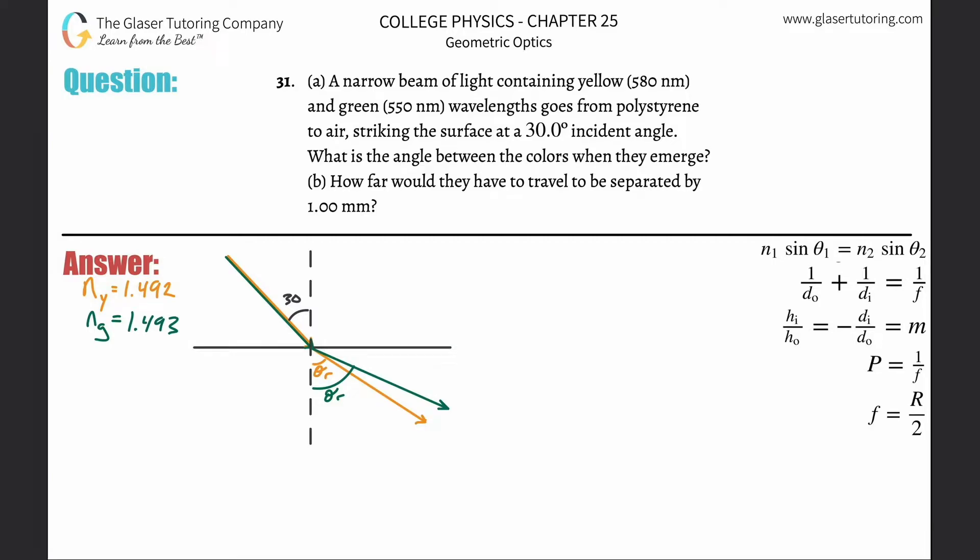Number 31, letter A: A narrow beam of light containing yellow and green wavelengths goes from polystyrene to air, striking the surface at a 30 degree incident angle. What is the angle between the colors when they emerge?